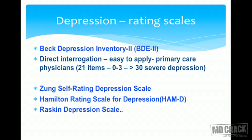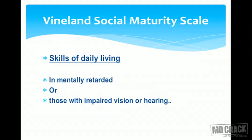Next we come to rating scales for depression. The most commonly used is the Beck Depression Inventory 2, BDI-2, which has 21 items scored 0 to 3; a score more than 30 indicates severe depression. Other rating scales include the Zung Self-Rating Depression Scale, Hamilton Rating Scale for Depression (HAM-D), and Raskin Depression Scale. The Vineland Social Maturity Scale is used to test skills and activities of daily living, especially useful in mentally retarded patients or those with impaired vision or hearing.